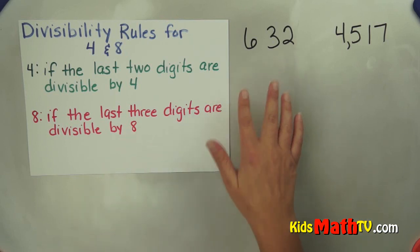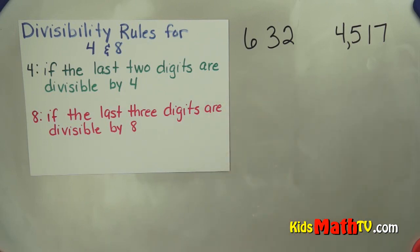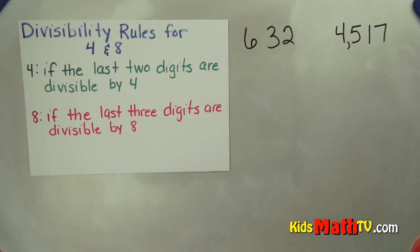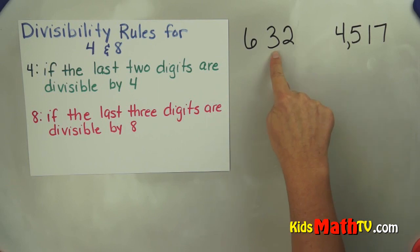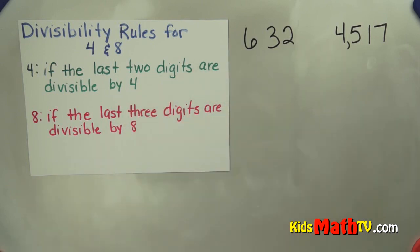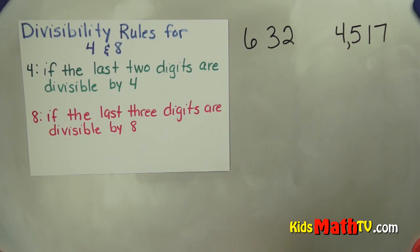So if you have a larger number, you can check relatively quickly to see if the number is divisible by 4 or 8. Let's try 632. Is that divisible by 4? Well let's look at the last 2 digits. Does 32 divide by 4 evenly? Yes it does — 32 divided by 4 is 8. So yes, 632 divides by 4.